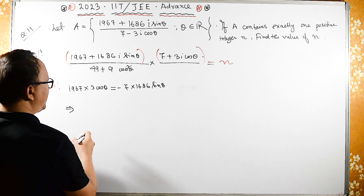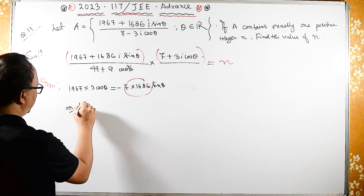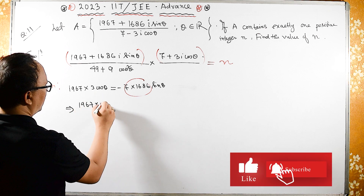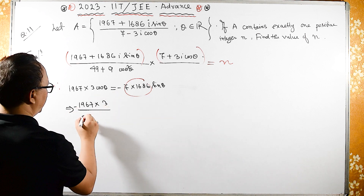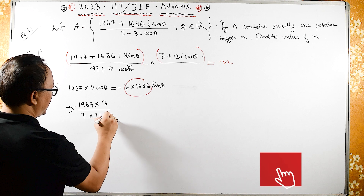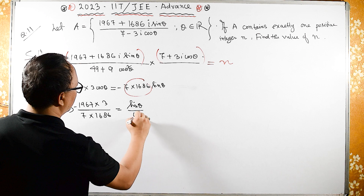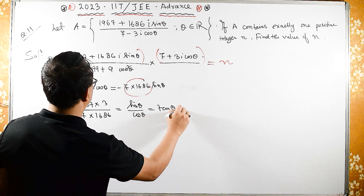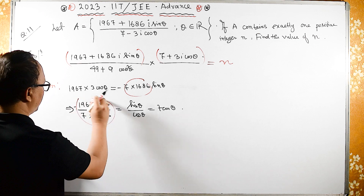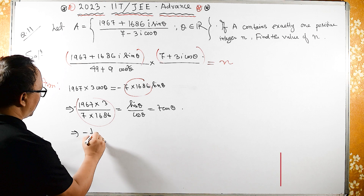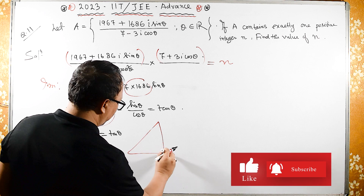So rearranging, we get 1967 into 3 upon 7 into 1686 equals sin theta upon cos theta, which is tan theta. After cancelling, this implies minus half equals tan theta.